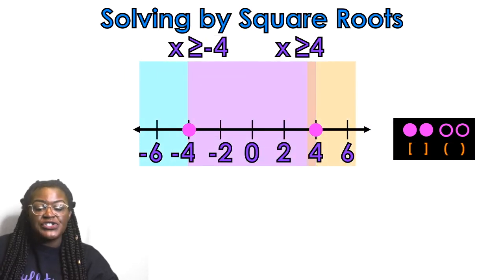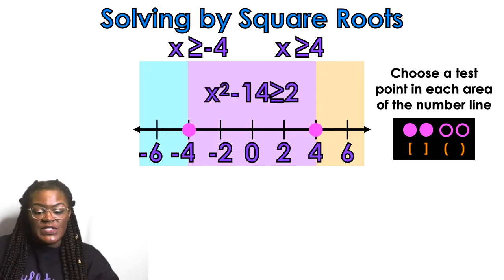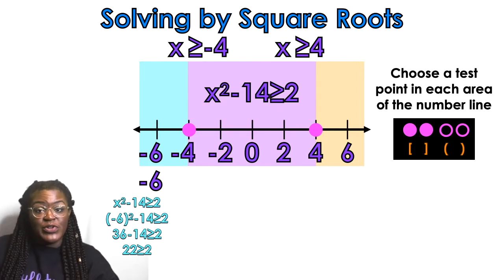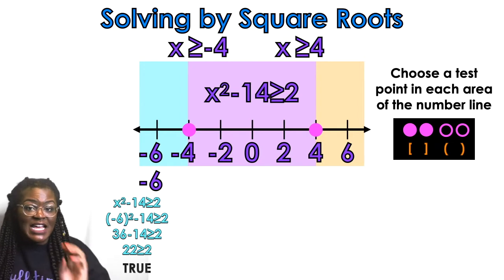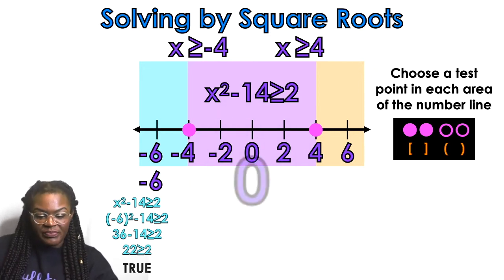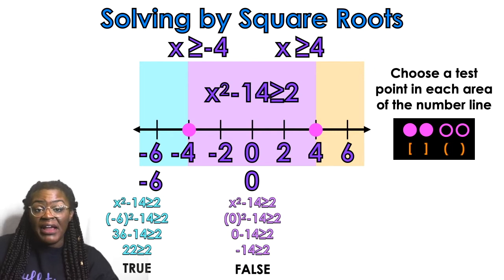I'm going to use different colors to show different areas of the number line. Each area of your number line — you need to choose a point in each area. For the first one, I'm going to use negative 6. I'll plug it into my original equation and simplify using PEMDAS. You need to decide: is that a true statement or a false statement? In this case, the blue area is true, so the blue area is going to be part of my solution. For the purple area, I'm choosing 0 and plugging 0 into the original equation. I get negative 14 is greater than or equal to 2 — that is false, so the purple area is not going to be part of my solution.